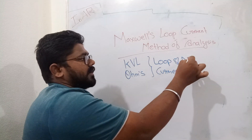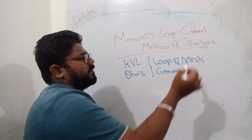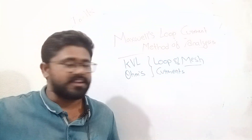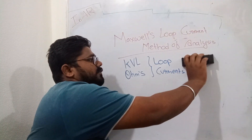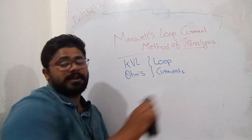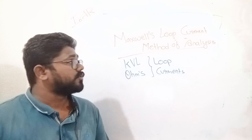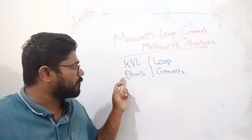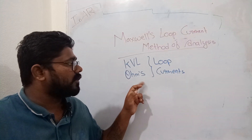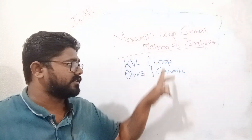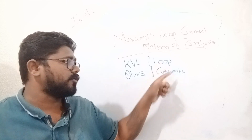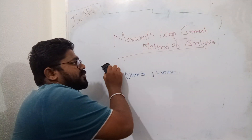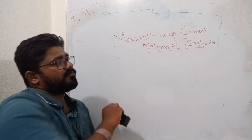Since a mesh is a loop in itself, we need not call it a mesh — we just find the loop currents. So in Maxwell's loop current method of analysis, we make use of Kirchhoff's voltage law and form equations using Ohm's law to find the loop currents. This is the final agenda.